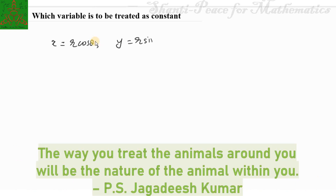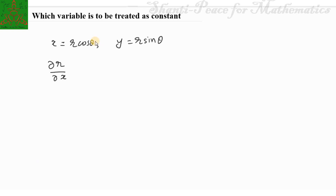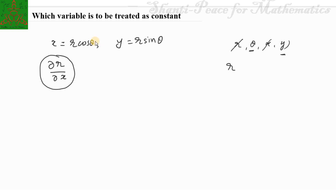Let us understand the problem: x = r cosθ and y = r sinθ are the relations given. Now to find ∂r/∂x, we need a relation between r and x. There are four variables: r, θ, x, and y. We are talking about the partial derivative of r with respect to x, so we need a relation of r in terms of r and θ.